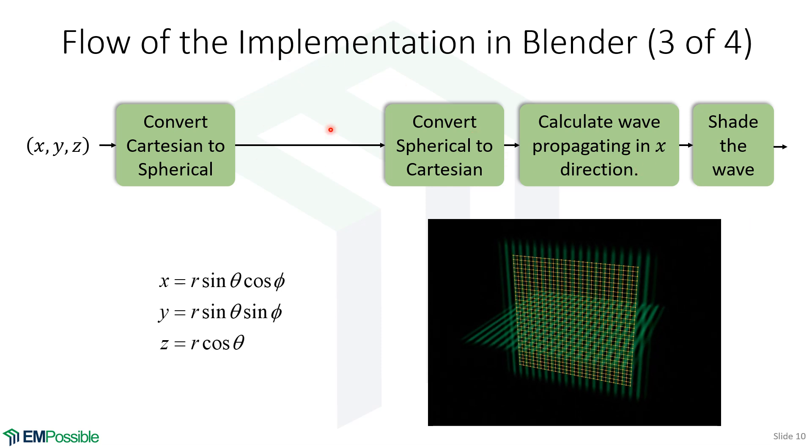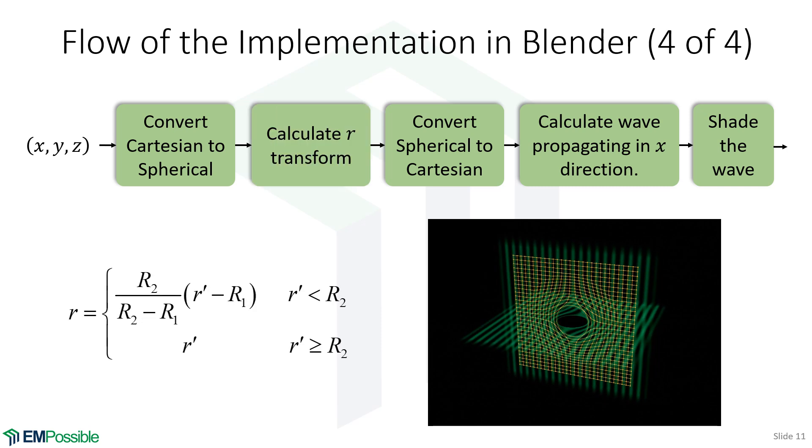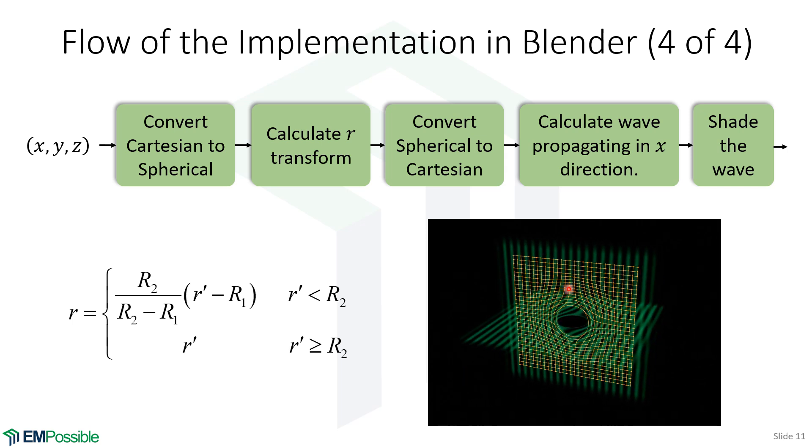However, this gives us a place then to insert the transform where we manipulate the value of r. So that's the last thing we'll do - just implement this equation for r, and then suddenly we'll see the cloaking in our render.